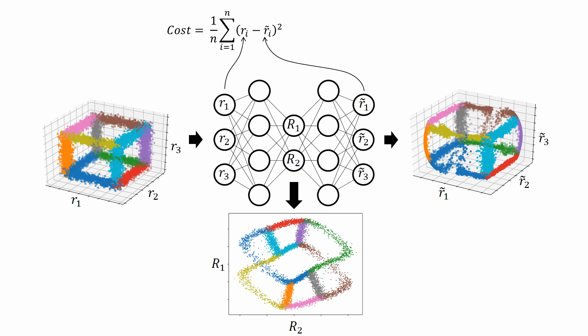As the cost function only compares the inputs and outputs of the network, the only requirement for the low-dimensional representation is that the decoder part of the network has to be able to reconstruct the input from this representation. There's nothing telling the network that preservation of distances might be valuable for us to obtain an intuitively understandable map.